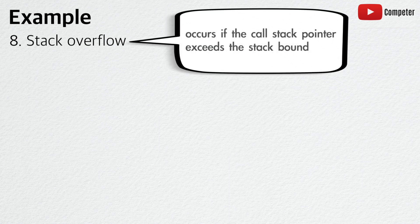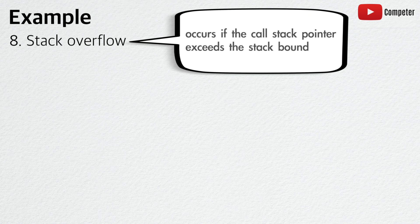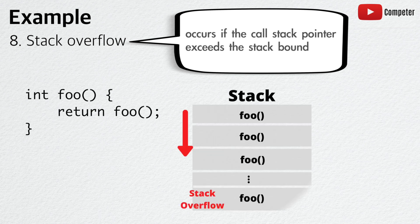A stack overflow occurs if the call stack pointer exceeds the stack bound. The most common cause of stack overflow is excessive deep or infinite recursion, in which a function calls itself so many times that the information associated with each call cannot all fit on the stack. In this example, the function foo, when it is invoked, continues to invoke itself, allocating additional space on the stack each time, until the stack overflows, resulting in a segmentation fault.